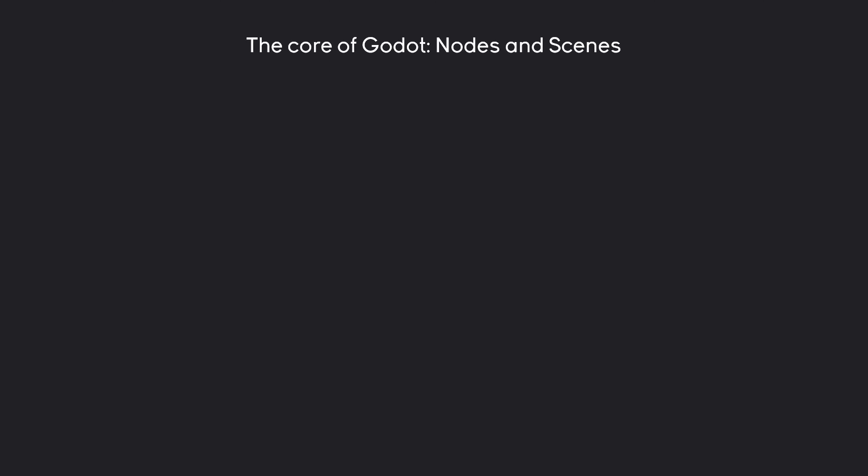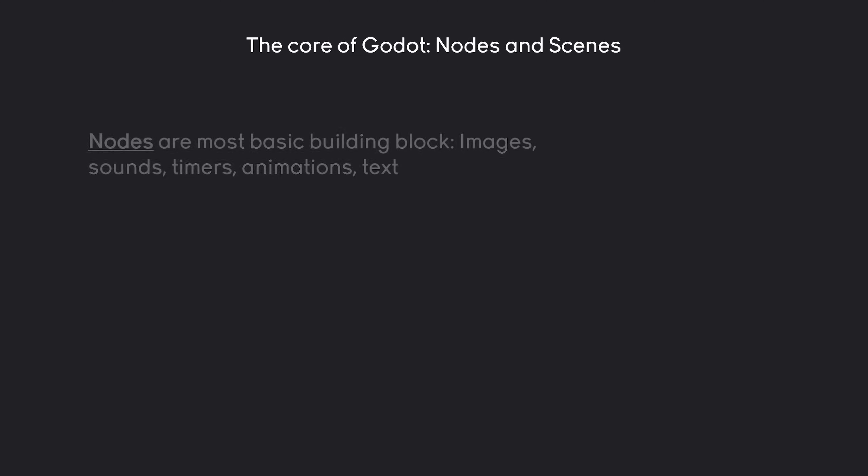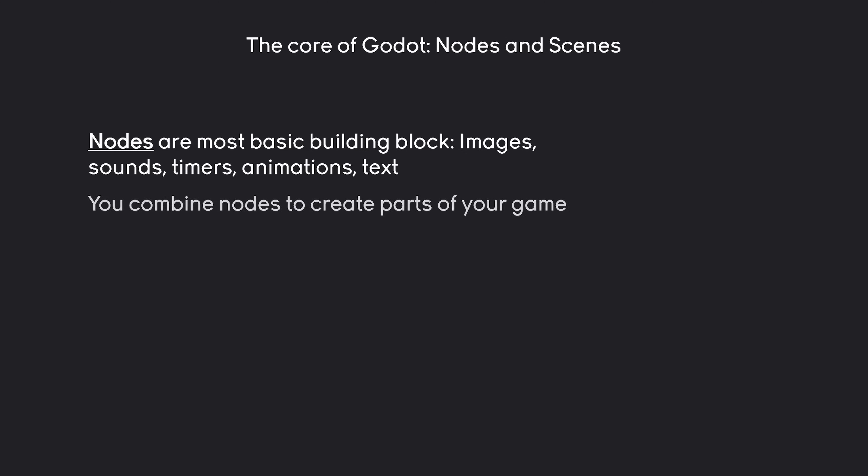Now with that out of the way we can talk about the core of Godot, and that would be nodes and scenes. Nodes are the most basic building block in Godot — those would be images, sounds, timers, animations, text, and there's a lot more. Godot has a few hundred nodes and every single one has one specific purpose. The main thing you have to understand is that you have to combine nodes to create parts of your game.